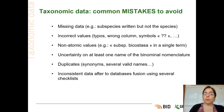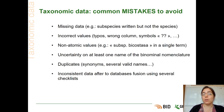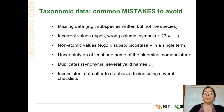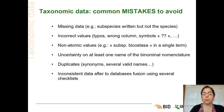Some other common mistakes to avoid regarding taxonomic data are missing data. For example, when you have a subspecies mentioned but not the species — it can just be an omission and it can be fixed easily. You can also have some incorrect values, such as typos, colons, or even symbols. If you have some uncertainties about the data, you should leave the spreadsheet cell blank instead of leaving symbols like question marks, because it can really affect the quality of your data.